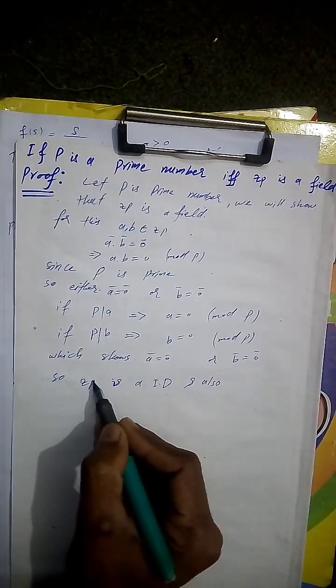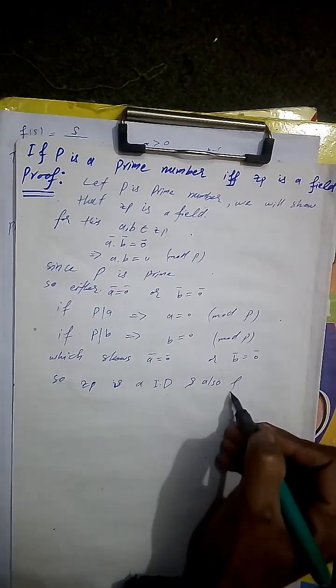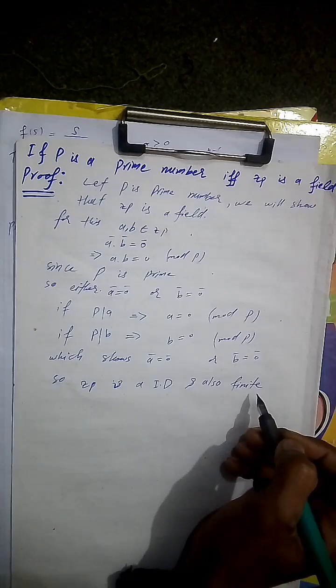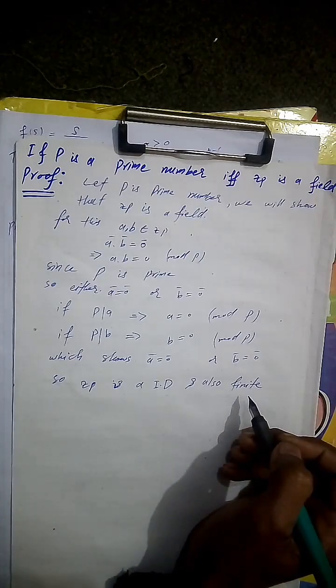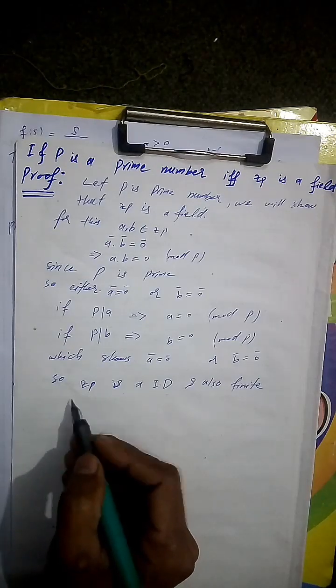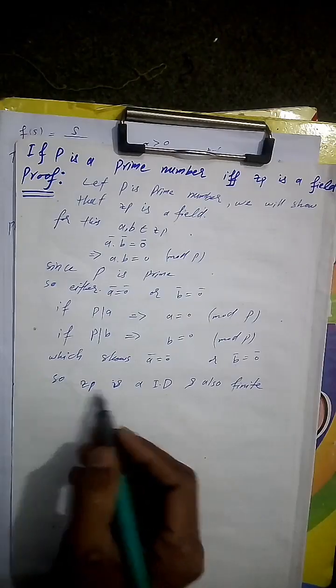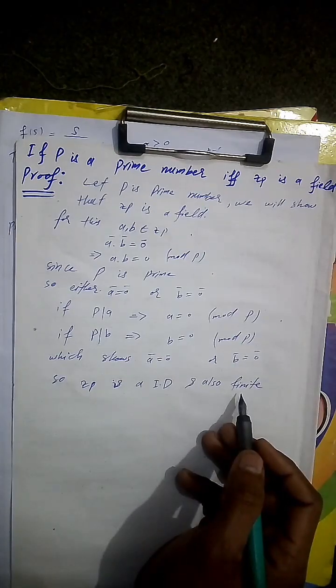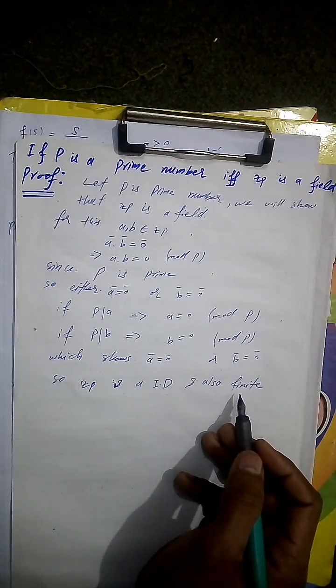And also Zp is a finite, is a field. Zp is an integral domain and finite is a field.